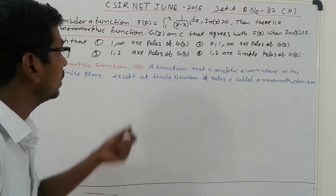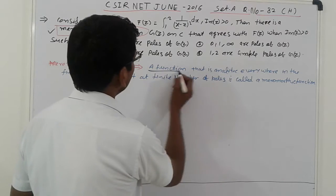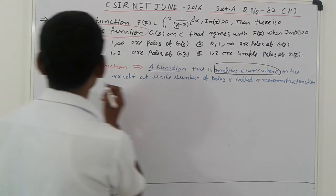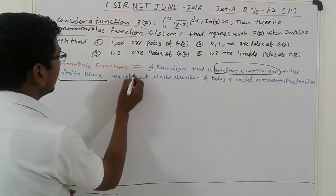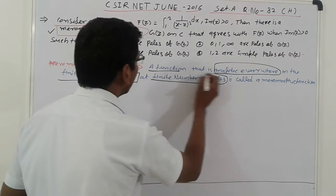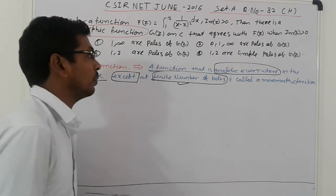Meromorphic function, what is this? A function that is analytic everywhere. This is the definition, a function that is analytic everywhere in the finite plane, except, that is important, except at finite number of poles. So it is called a meromorphic function.